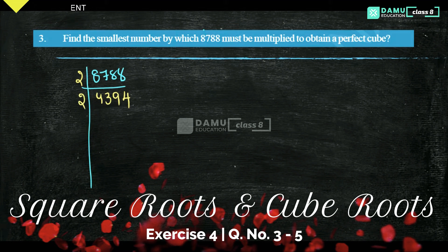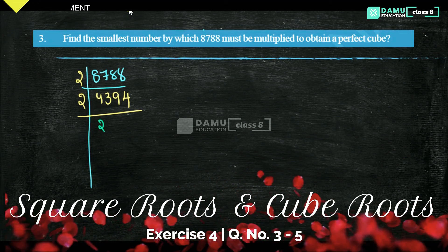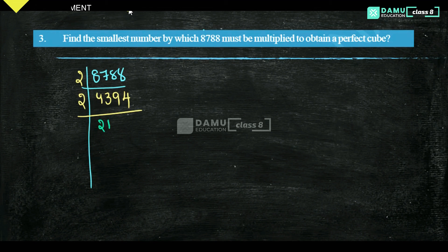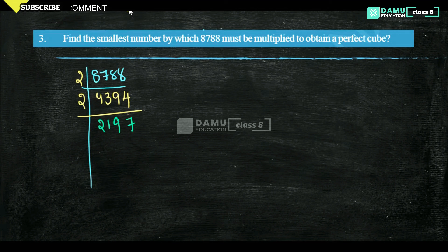Then go with 2 again. 2 twos are 4, then 2 ones are 2, then 2 nines are 18, then 2 sevens. Is that divisible by 2? No.